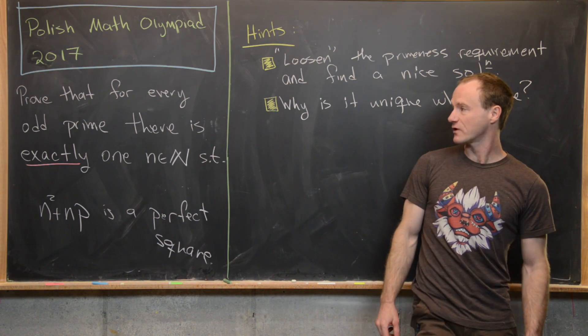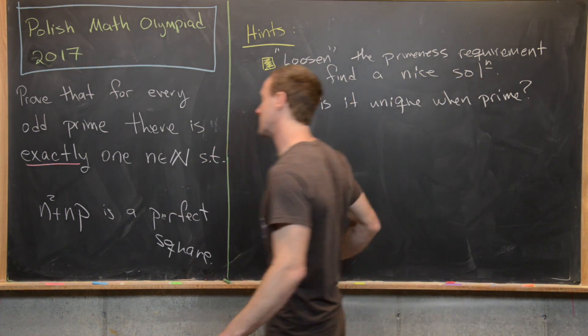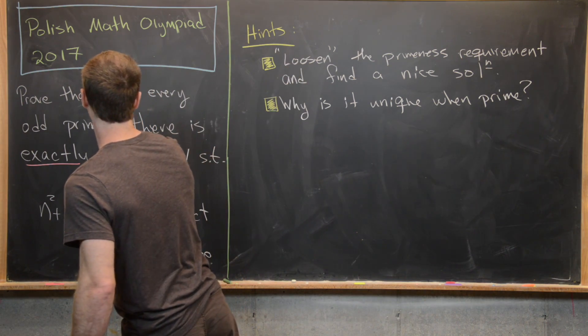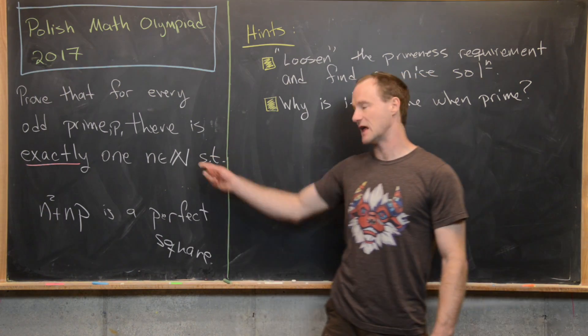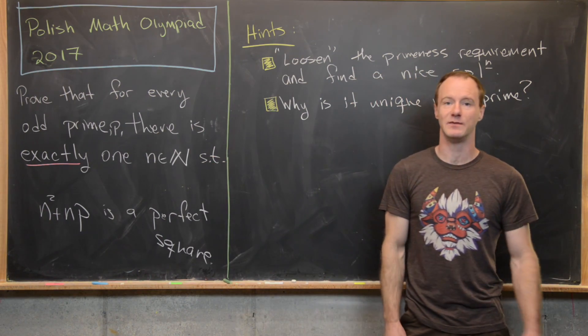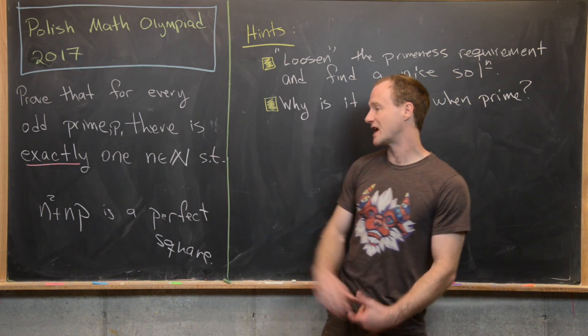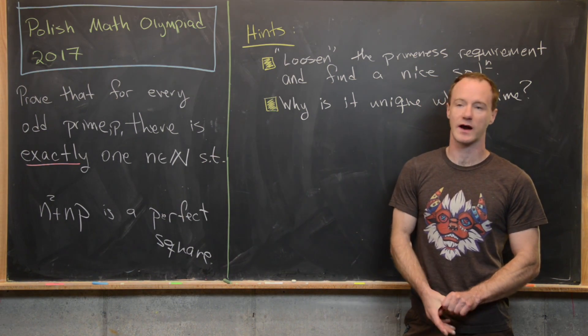We want to prove that for every odd prime p, there is exactly one natural number n—by natural number I mean positive integer—such that n squared plus np is a perfect square.